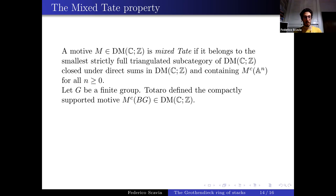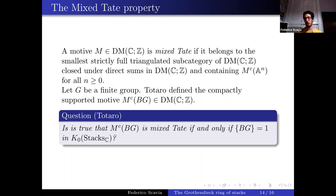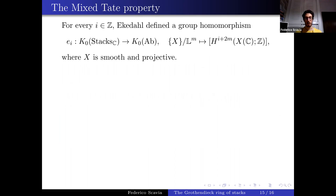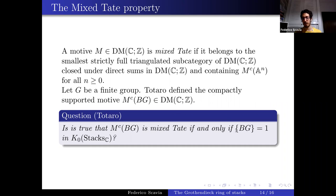When G is a finite group, Totaro defined the compactly supported motive of BG, and we can ask: is this motive mixed Tate? Totaro asks: is it true that the compactly supported motive of BG is mixed Tate if and only if the class of BG is trivial? This is another question of the form [BG] = 1 ↔ some other property.